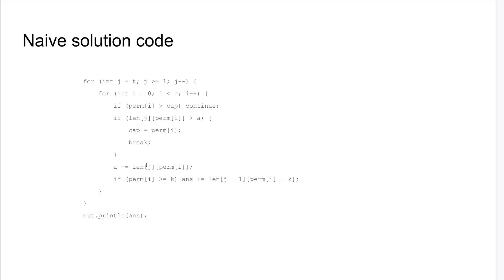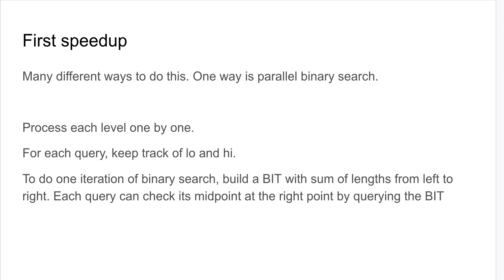So then this way you can do the binary search for all the values at the same time. And you can do binary search on this very fast. Another way you can do this is with persistent segment trees or persistent data structures, but that has a little bit more overhead, might be a little bit slower. So yeah, parallel binary search is fast.